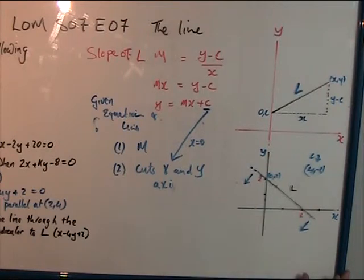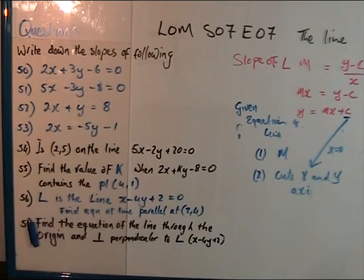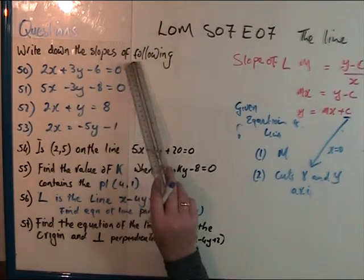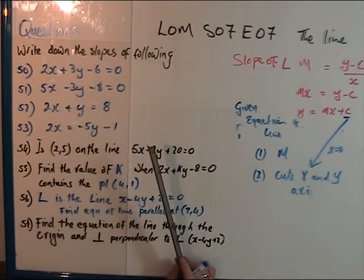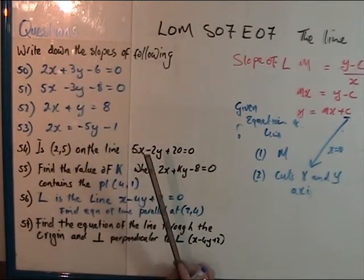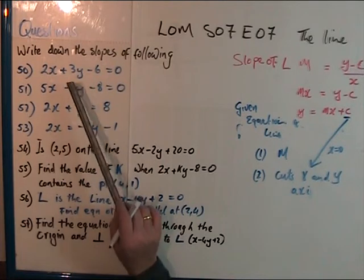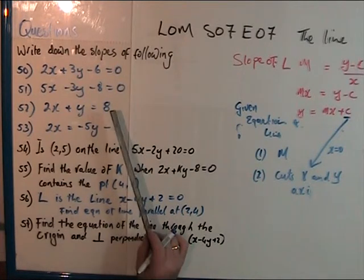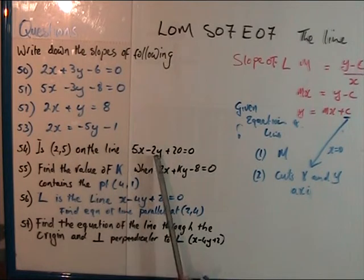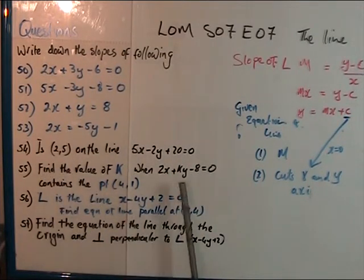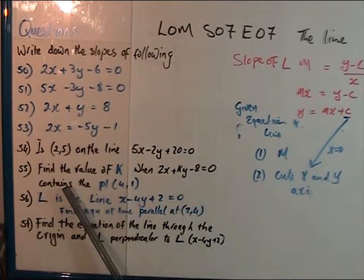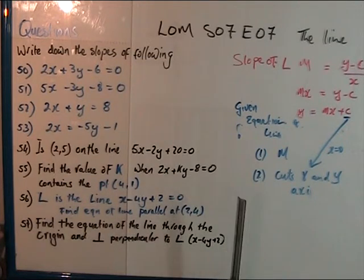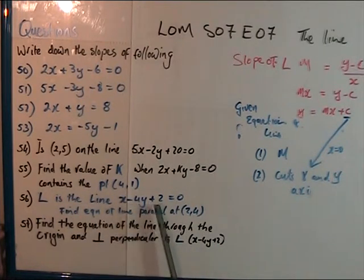Now for practice questions. First, write down the slopes of each of the following — manipulate the formula into Y equals MX plus C, remembering the Y coefficient must be one. Next, is the point (2, 5) on the line? Slot them in and check if it equals zero. Then, find the value of K when 2X plus KY minus 8 equals zero contains the point (4, 1) — substitute (4, 1) for X and Y to find K.